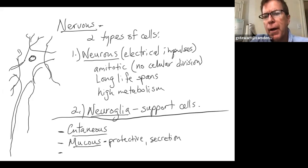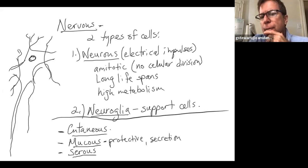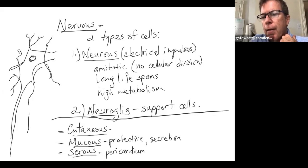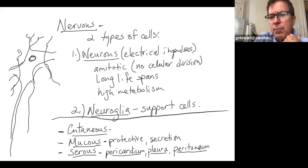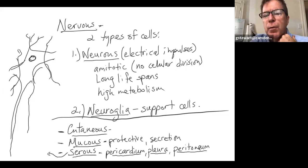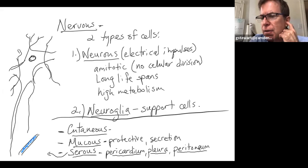Third are serous membranes — double-walled, fluid-secreting membranes. Examples are the pericardium around the heart, the pleura around the lungs, and the peritoneum around the abdominal organs. The two layers are visceral — closest to the organ — and parietal — the outside layer closer to the cavity. Fluid is secreted between these layers almost always to reduce friction for moving parts, since the heart beats continuously and the lungs expand and contract multiple times every minute.